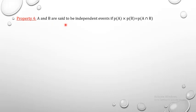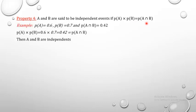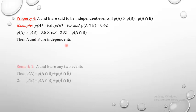Property 4: A and B are independent events if P(A) × P(B) = P(A∩B). Example: P(A) = 0.6, P(B) = 0.7, and P(A∩B) = 0.42. Since 0.6 × 0.7 = 0.42 = P(A∩B), A and B are two independent events.